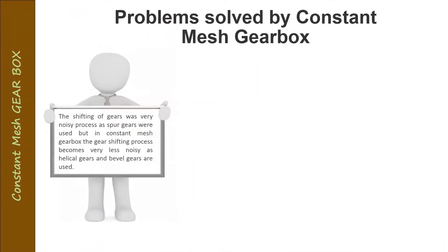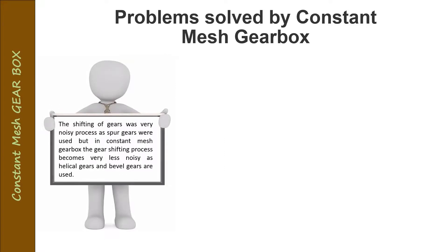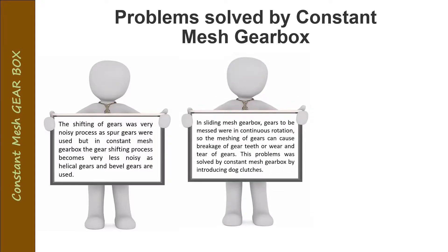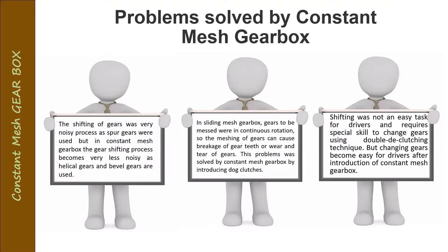Problems solved by the constant mesh gearbox: first, gear shifting was a very noisy process, but in the constant mesh gearbox the noise is greatly reduced. Second, since gears in the sliding mesh were in continuous rotation, meshing could cause breakage of gear teeth, but here any damage affects only the dog clutches. Third, shifting was not an easy task for drivers and required special technique — double de-clutching — but now any driver can easily shift gears.